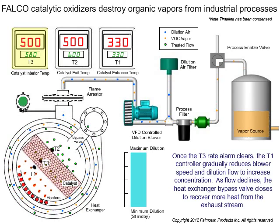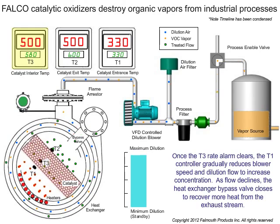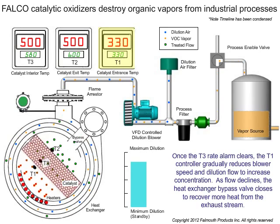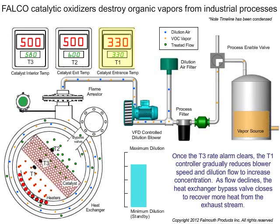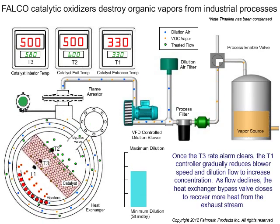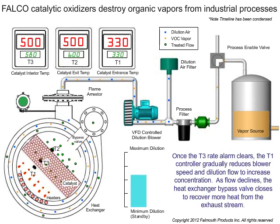Once the T3 rate alarm clears, the T1 controller gradually reduces blower speed and dilution flow to increase concentrations. As flow declines, the heat exchanger bypass valve closes to recover more heat from the exhaust stream.